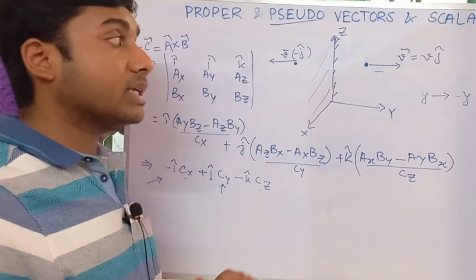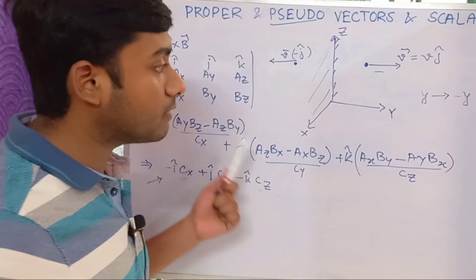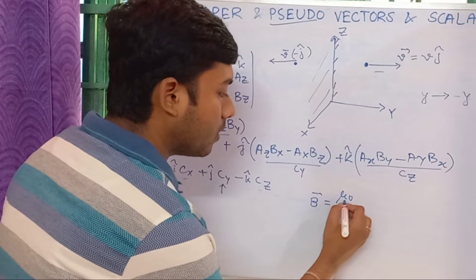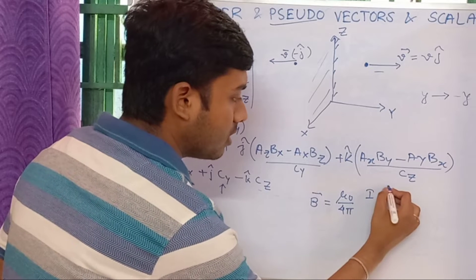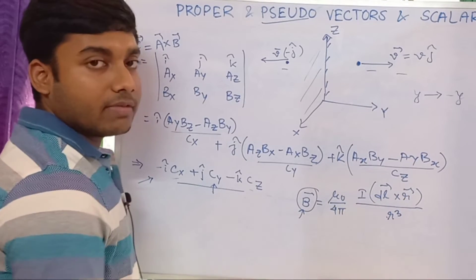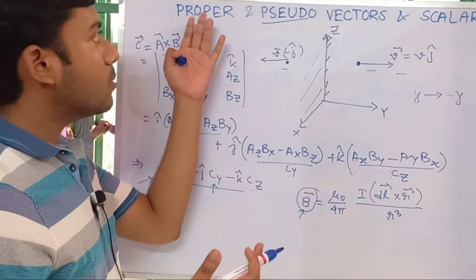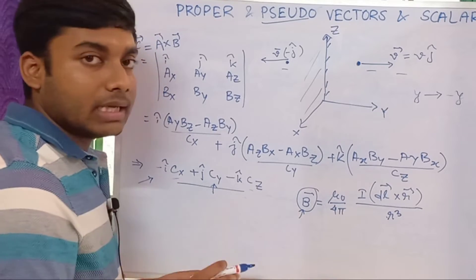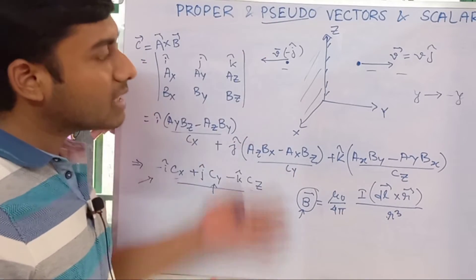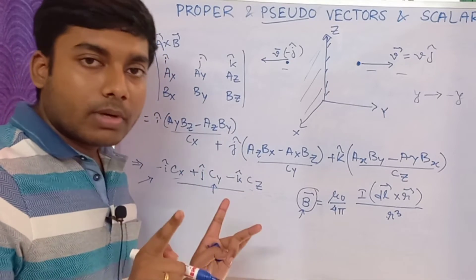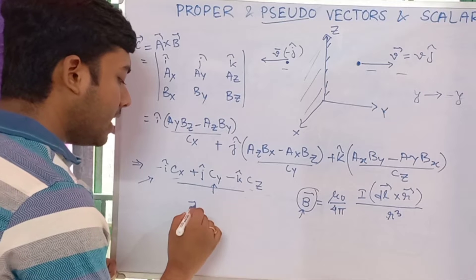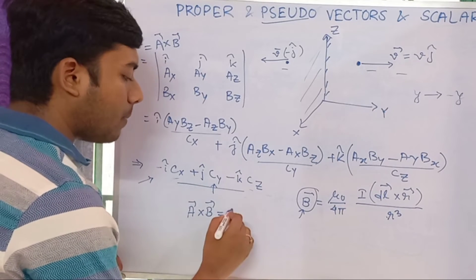So these are proper vector and pseudo vector. Now, what is the physical use? Recall the Biot-Savart law for magnetic field: B = (μ₀/4π) · I·dL×r̂. Here dL vector and r vector are separately proper vectors, but their cross product makes B a cross product of proper vectors. That means B is a pseudo vector.